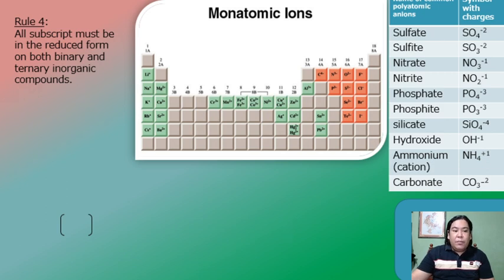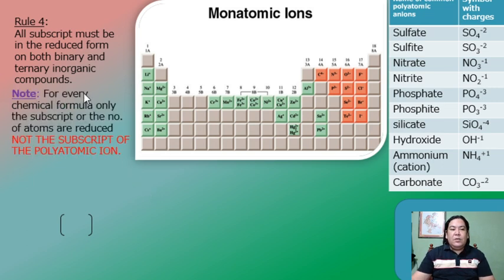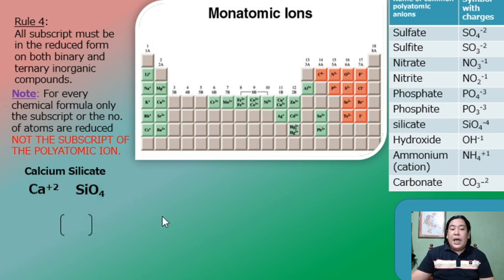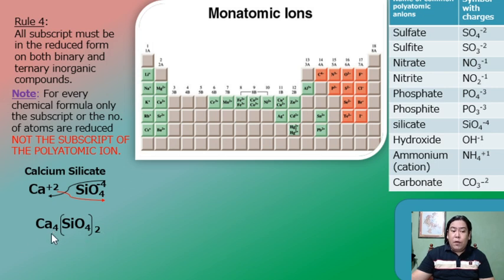All subscripts must be in reduced form for both binary and ternary inorganic compounds — they need to be reduced to give the empirical formula. Note: only the subscripts representing the number of atoms are reduced, not the subscript of the polyatomic ion. For example, calcium silicate — calcium is Ca²⁺ and silicate is SiO₄⁴⁻. Crisscrossing gives calcium a subscript of 4 and silicate a subscript of 2. Since 4 and 2 are both divisible by 2, reduce them: the final formula is Ca₂SiO₄.